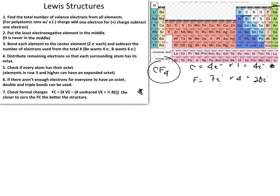This gives us the total electrons from each element. We then do a summation — adding the total valence electrons from carbon and fluorine — to get the total number of valence electrons for the molecule.